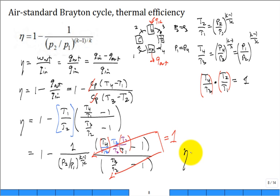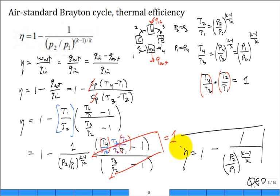And so now the thermal efficiency is just 1 minus 1 over the pressure ratio p2 over p1 to the k minus 1 over k. Q.E.D. What we set out to show has been shown.